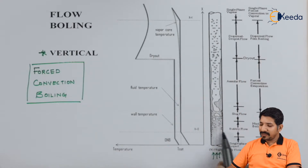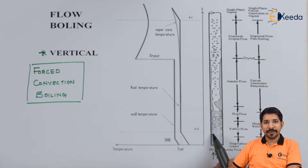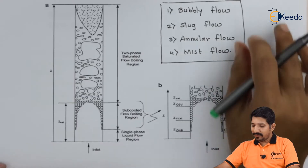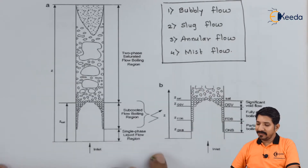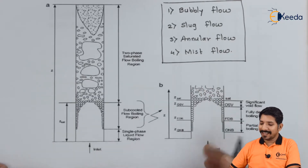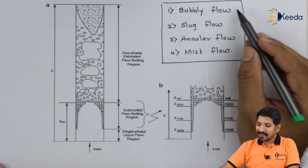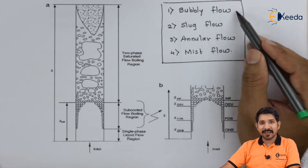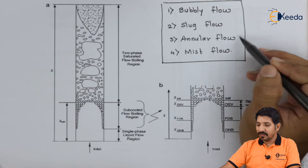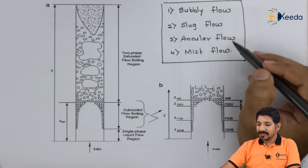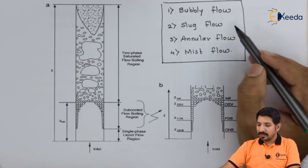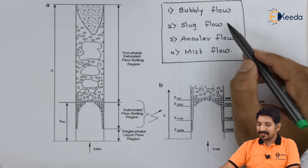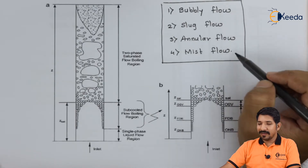In the bubbly region, small bubbles are formed. As you can see from the diagram, there are four types of regimes: bubbly, slug, annular, and mist.